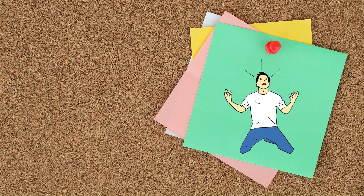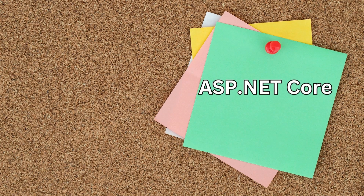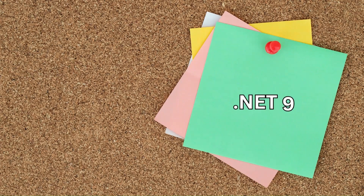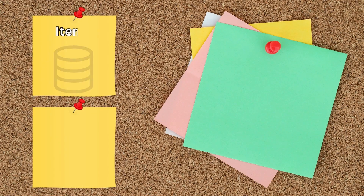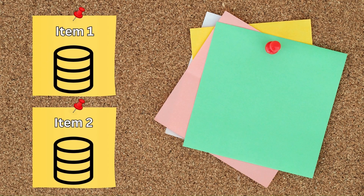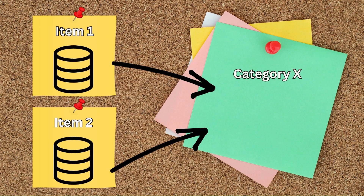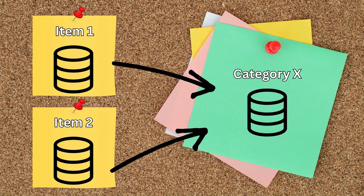If you've been having trouble setting up a one-to-many relationship in ASP.NET Core MVC, then you should watch this video because that's exactly what we'll do using the latest .NET version, .NET 9. What is a one-to-many relationship? Let's say we have a list of items stored in our database and we want each item to belong to a single category. One category can be assigned to many items, but each item can belong to only one category — this requires a one-to-many relationship between the category and the items.